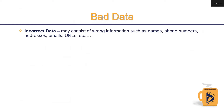Incorrect data may consist of wrong information. This wrong information comes in forms such as names, phone numbers, addresses, emails, URLs, and more.